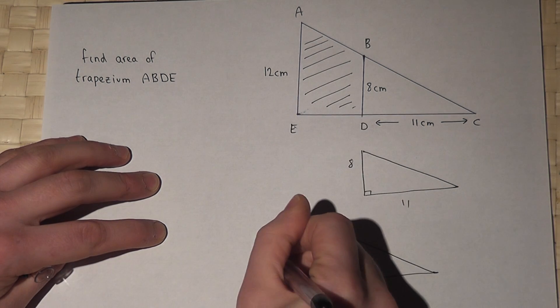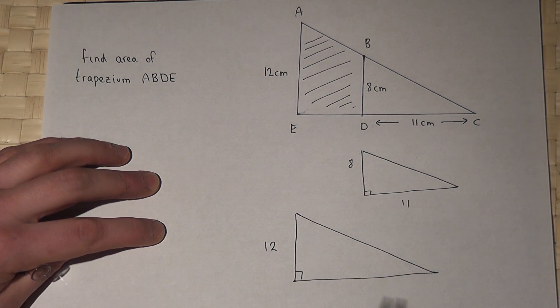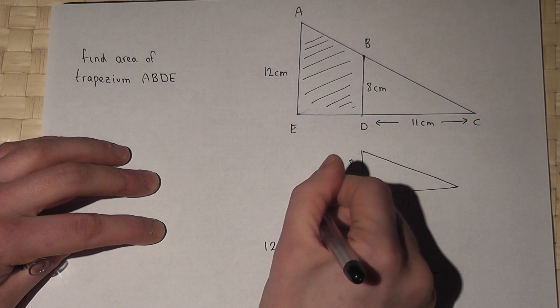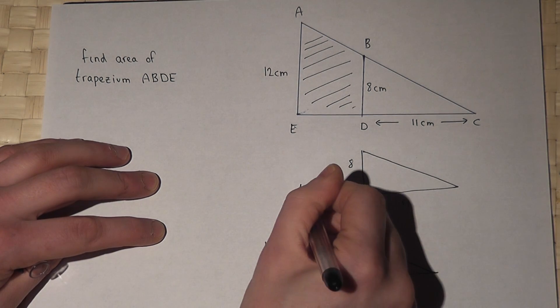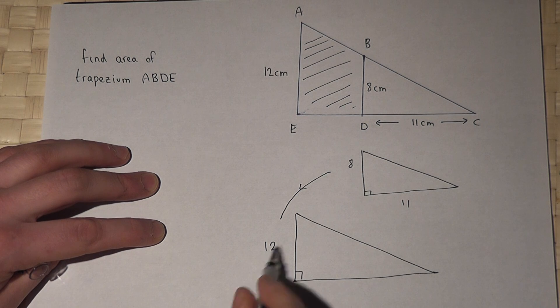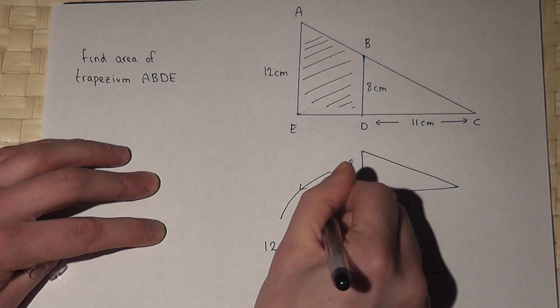which has got a height of 12, but we're missing the base. However, if we look at these two sides which correspond to the two heights, we can see how this height is one and a half times as big as the 8. So the scale factor is 1.5.